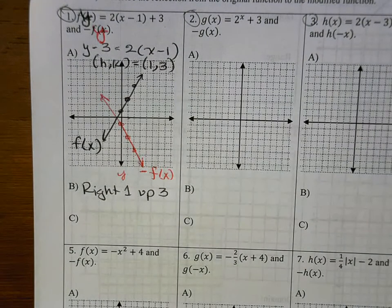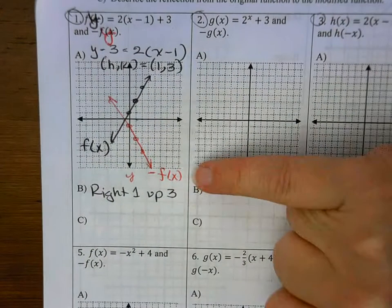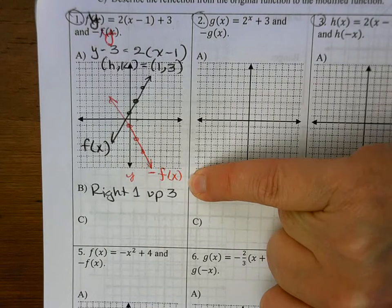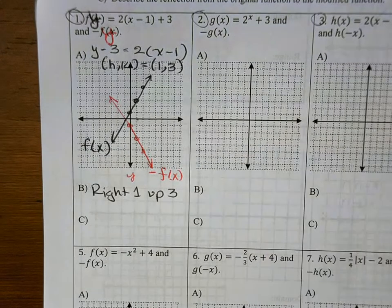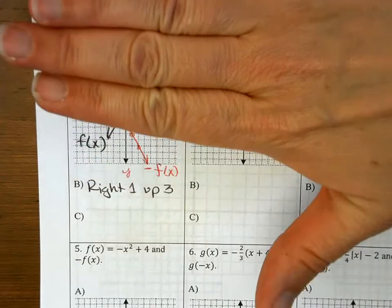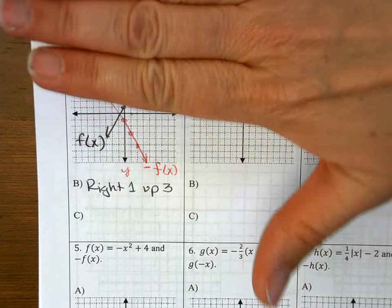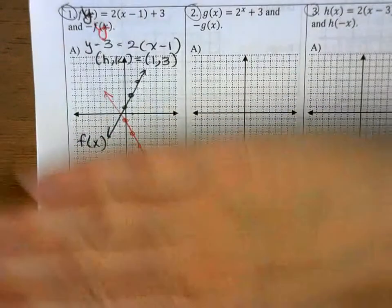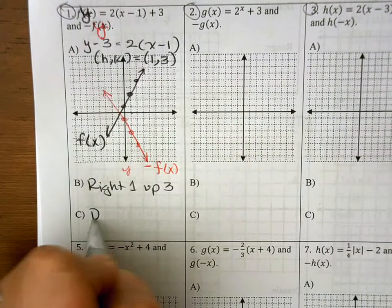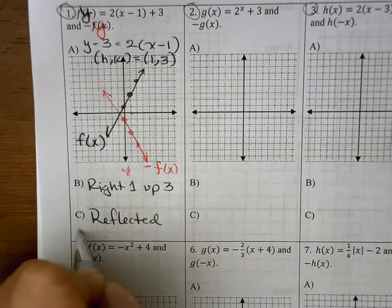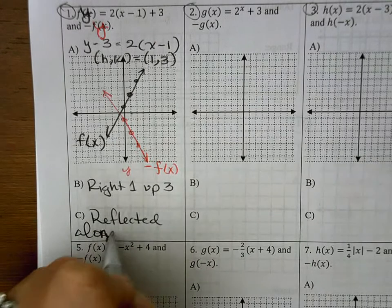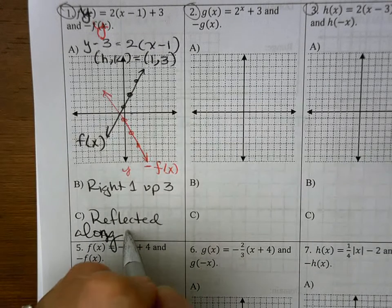For part c, it says describe the reflection from the original function to the modified function — from f of x to negative f of x. All the y values that were positive went negative. Moving from positive to negative means I'm flipping vertically, so the graph is reflected along the x-axis.